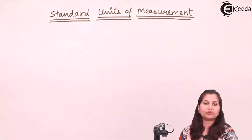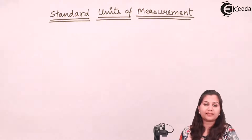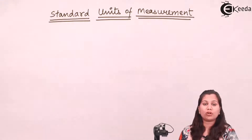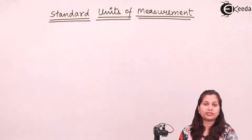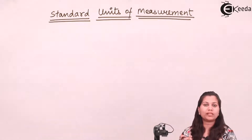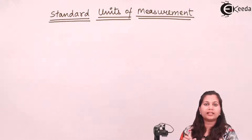First, let us understand what is the unit of measurement. A unit of measurement plays a very important role for physical quantities. If we want to measure anything — like the length of something, the weight of an amount, or how heavy or how long it is — for everything we do some type of measurement. Whenever we are doing any measurement, we specify our result in the form of a number and a unit.